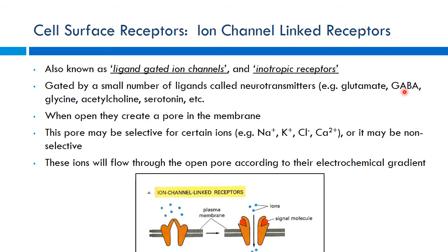Think about GABA when you drink ethanol — GABA is a big player there, which is why you get very sleepy after drinking too much. Glutamate, on the other hand, is the flip side — it's a major excitatory neurotransmitter and can actually cause seizures if there's too much glutamate activity. Think of those two as being two sides of the same coin. Other neurotransmitters important for these ion-gated channels include acetylcholine and serotonin.